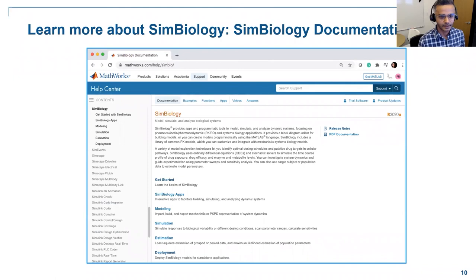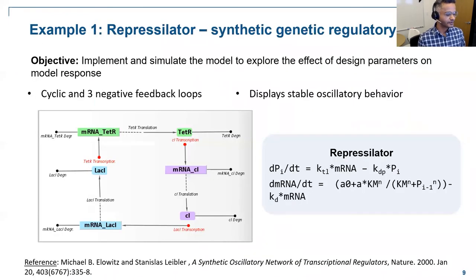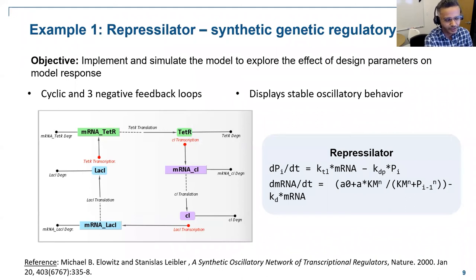Henry asks how to determine the Hill coefficients (N) in the ODEs. It's very process-dependent and depends on the experiments and the model. For the repressilator model, values for N are available in the literature. For today's demonstration I used arbitrary values, but there are many experiments done with the repressilator model from which you can find values.